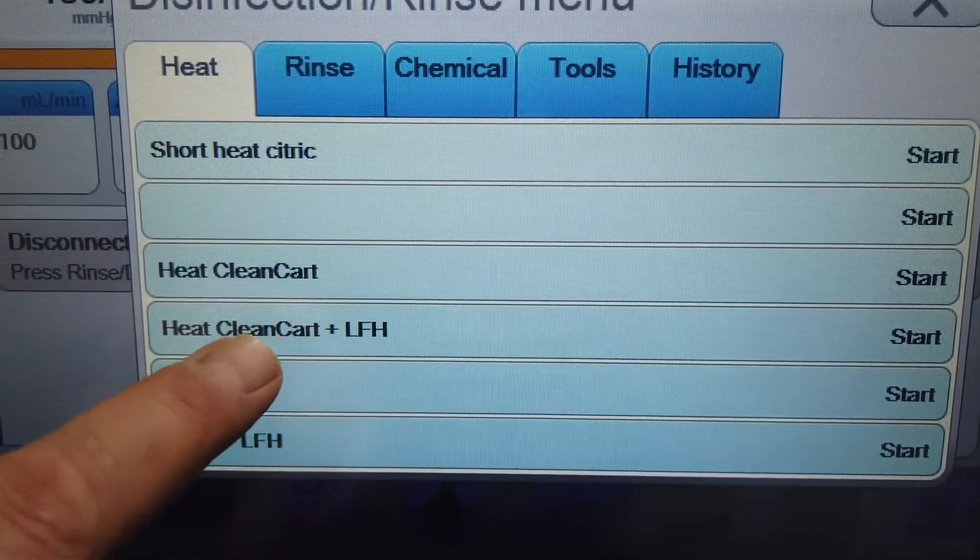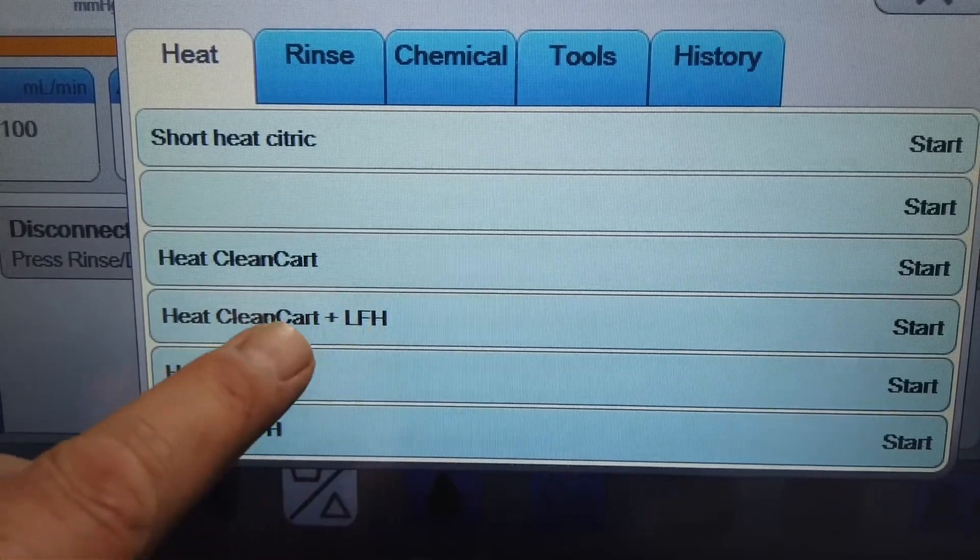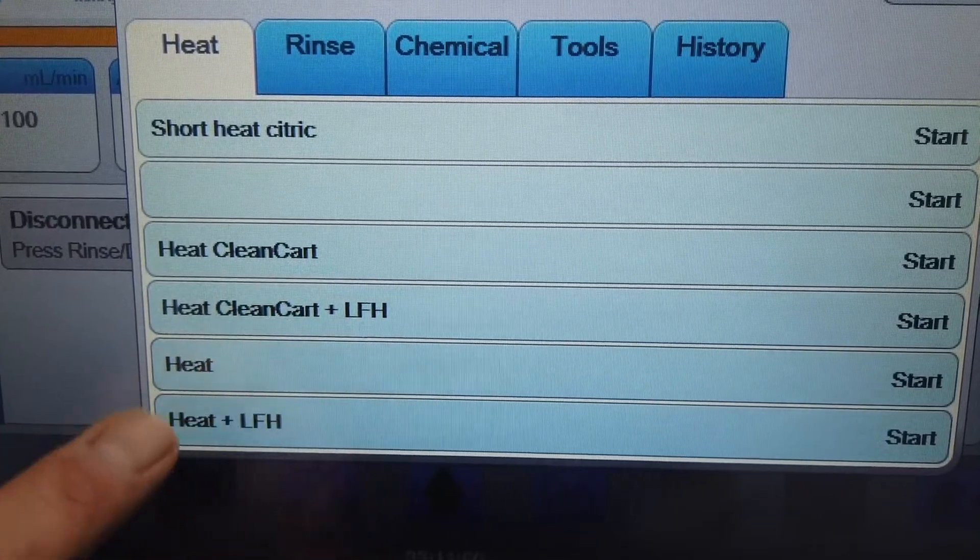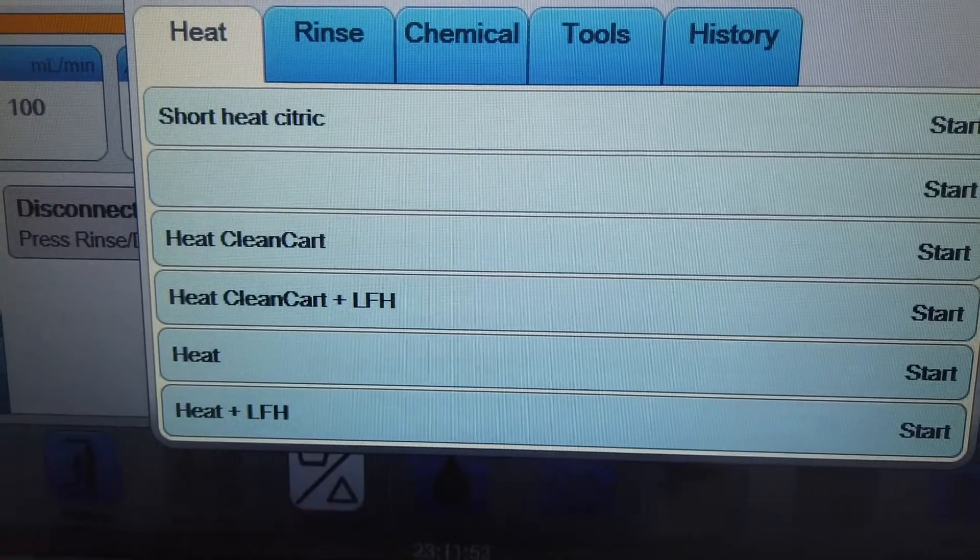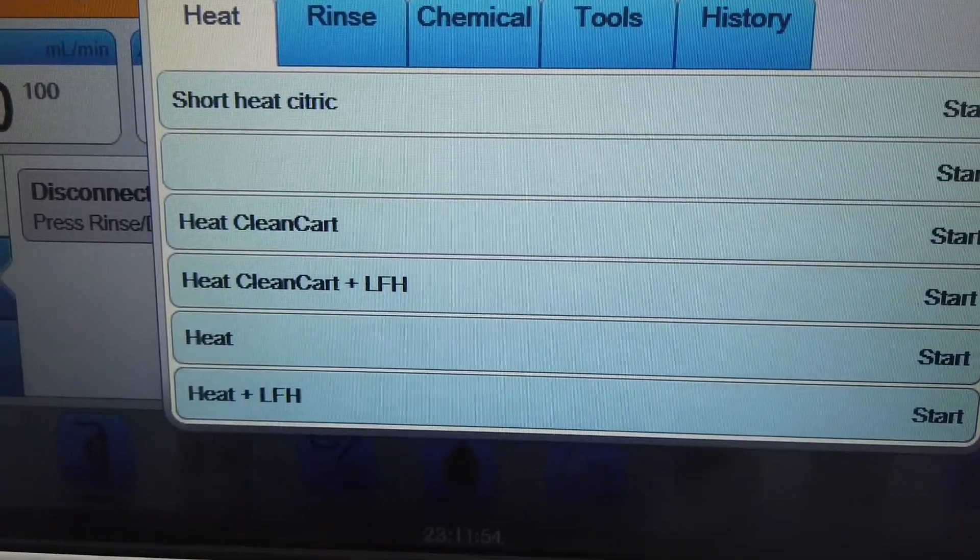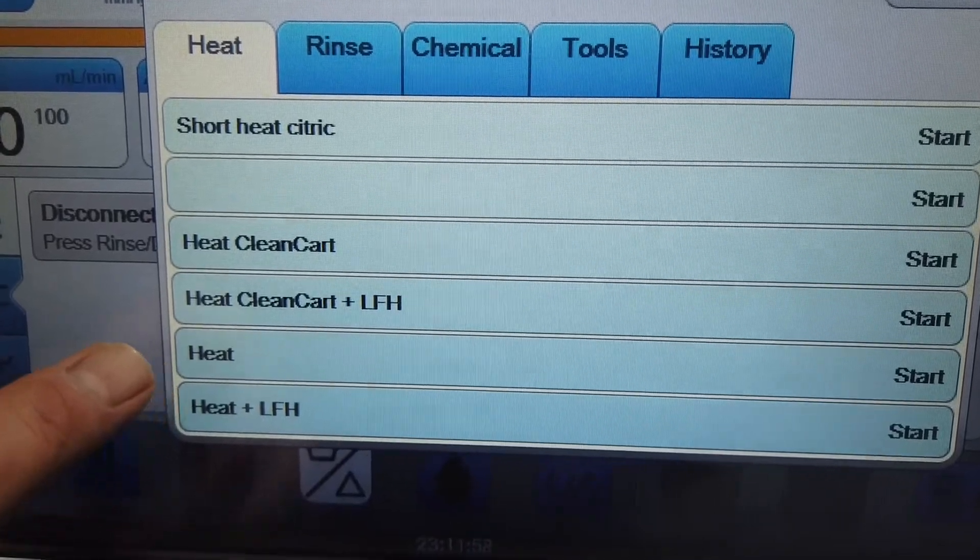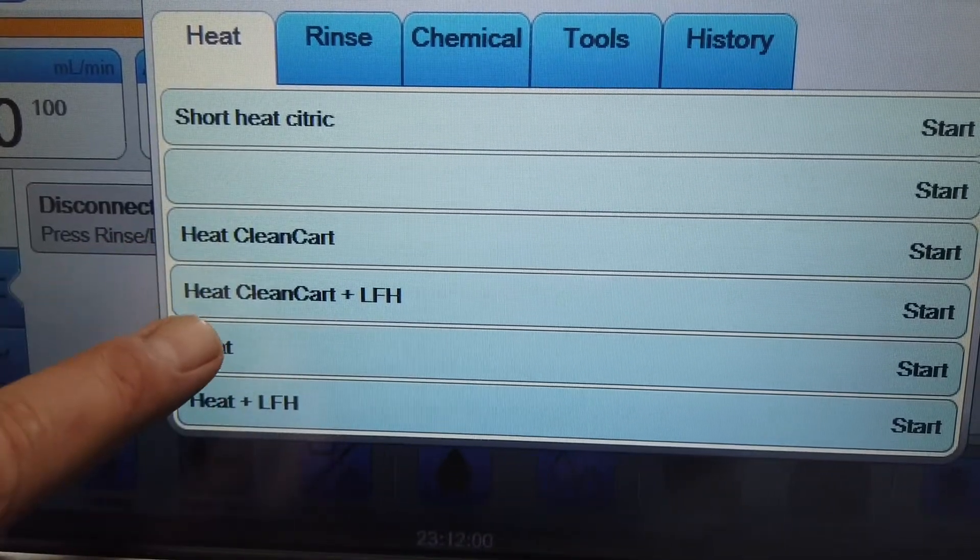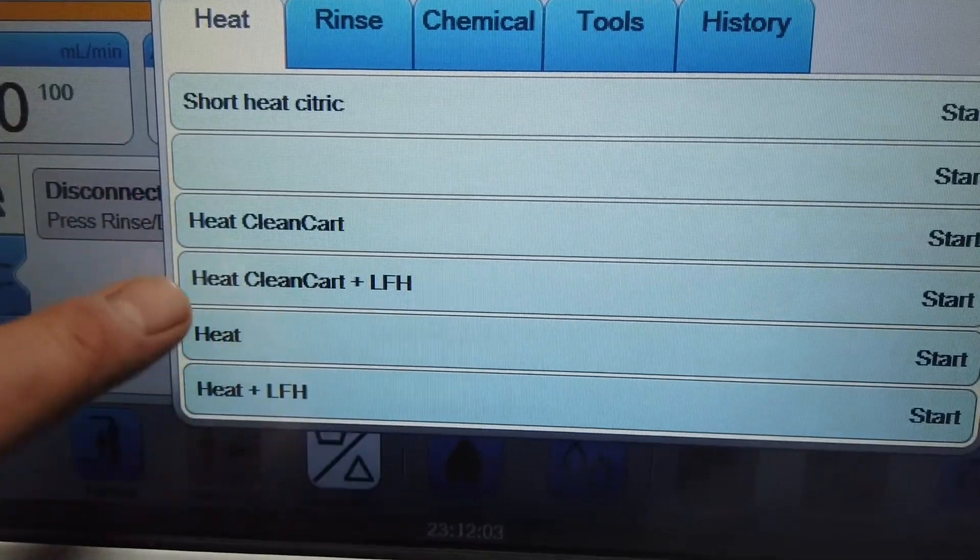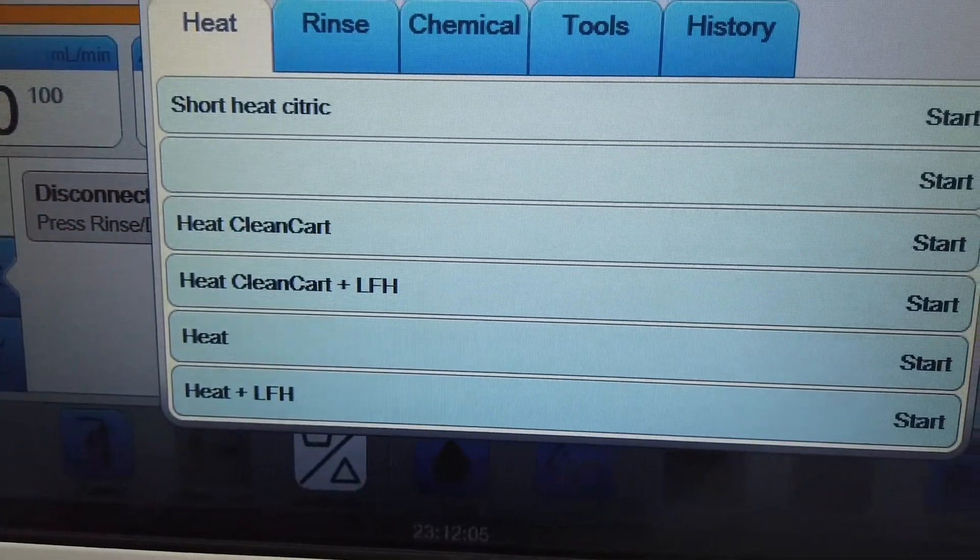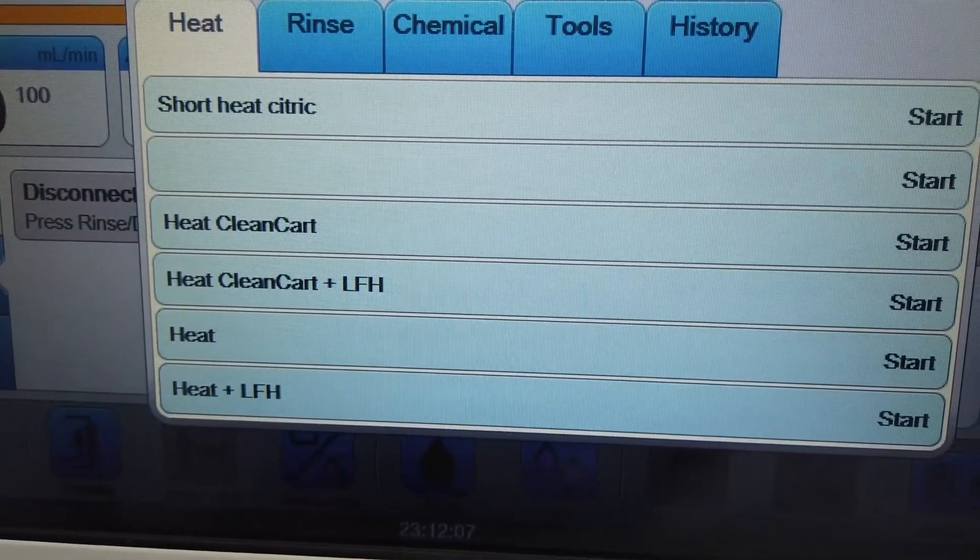If you press this, it's a clean cart plus LHF, which is an A as in apple. If you push heat, then we don't require any type of clean cart. Normally, we want to cycle them. So we do heat, clean cart, clean cart LFH, and then back to heat again and just cycle when you run through it.